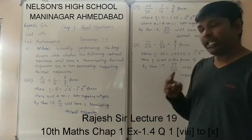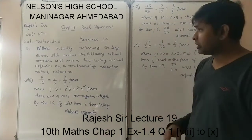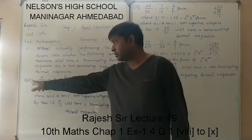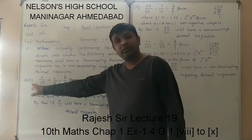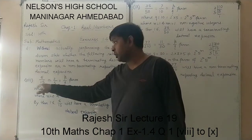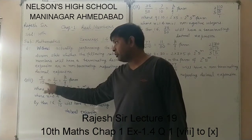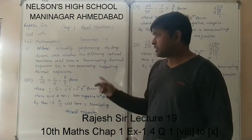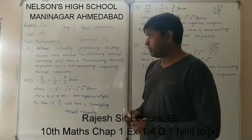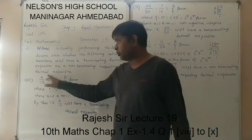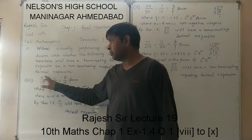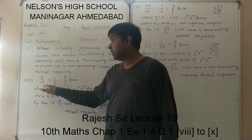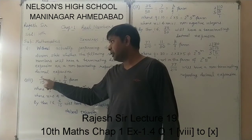Now the remaining 3 questions we will see. The 8th question is: 6 upon 15. In this type of question, when we have 6 upon 15, we look for a common factor between P and Q. Here 3 is common between 6 and 15.